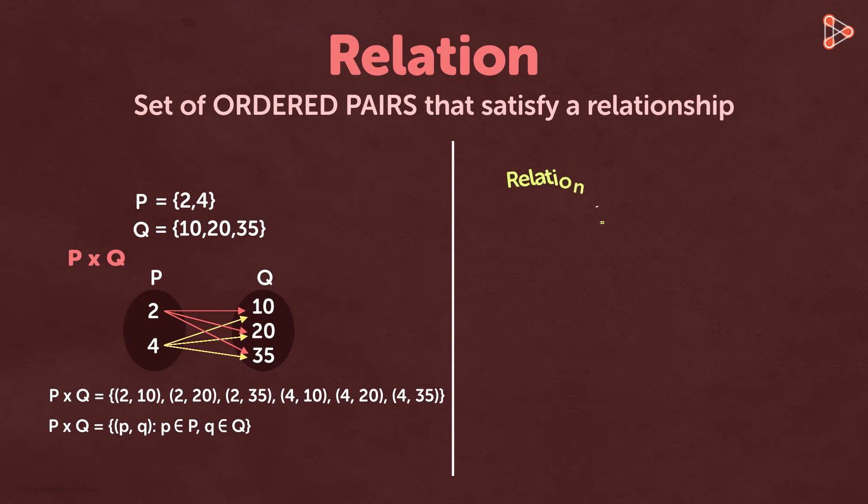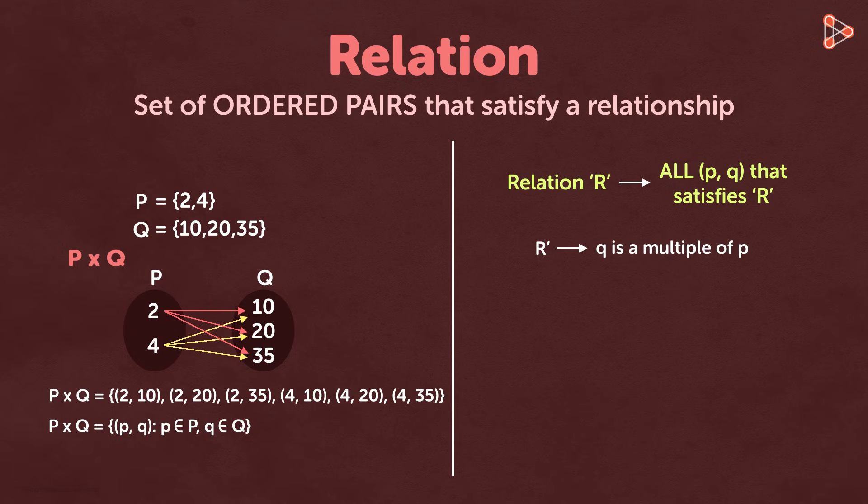Now let's introduce a relation R. Relation R gives us a set of all ordered pairs that satisfy a relation. It could be any relation. Now suppose we introduce a relation R dash such that Q is a multiple of P.